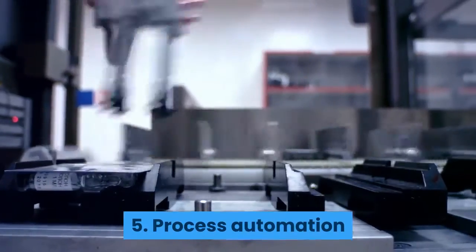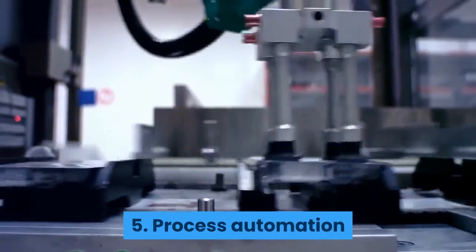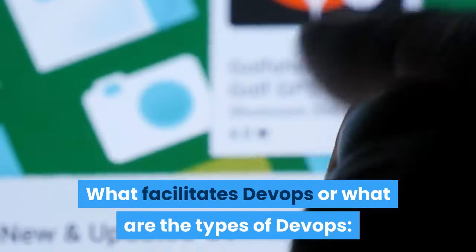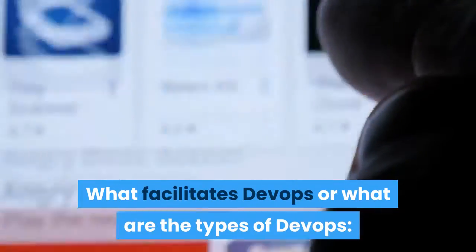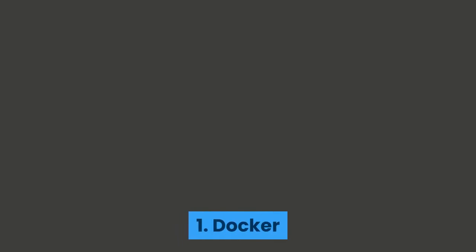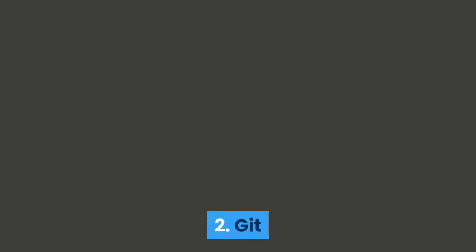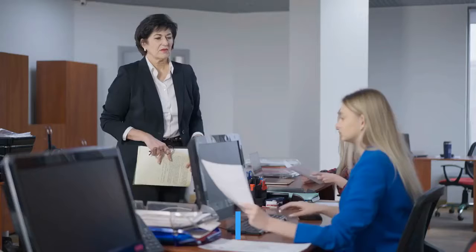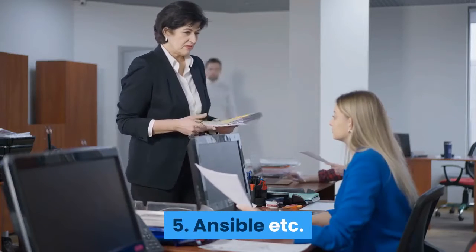5. Process Automation. What facilitates DevOps, or what are the types of DevOps? The tools include: 1. Docker, 2. Git, 3. Terraform, 4. Kubernetes, 5. Ansible, and more.